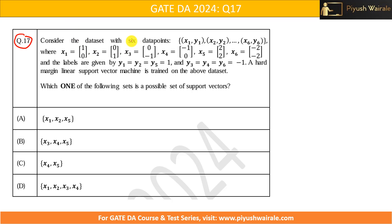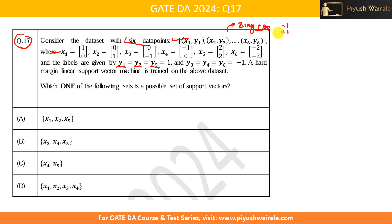Consider the dataset with six data points: x1=(1,0), x2=(0,1), x3=(0,-1), and x4, x5, x6 as given. The labels are y1=y2=y5=+1 and y3=y4=y6=-1. So we are dealing with a binary classification problem with classes +1 and -1.